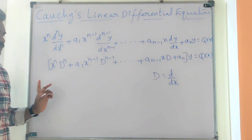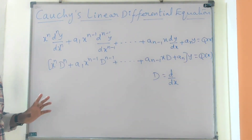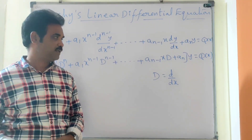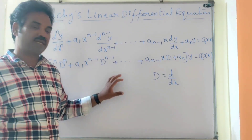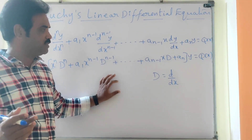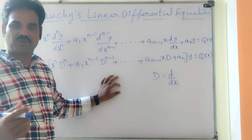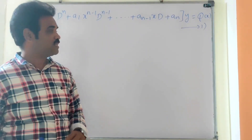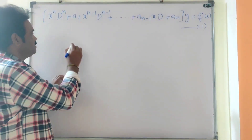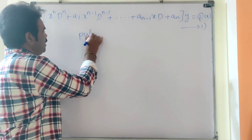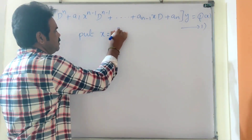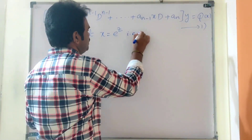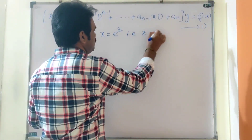This is the operator form of Cauchy's Linear Equation. Now, how to solve this? This equation can be solved by converting it into a linear differential equation with constant coefficients. To solve Cauchy's Linear Equation, the substitution is x = e^z, that is z = log x.